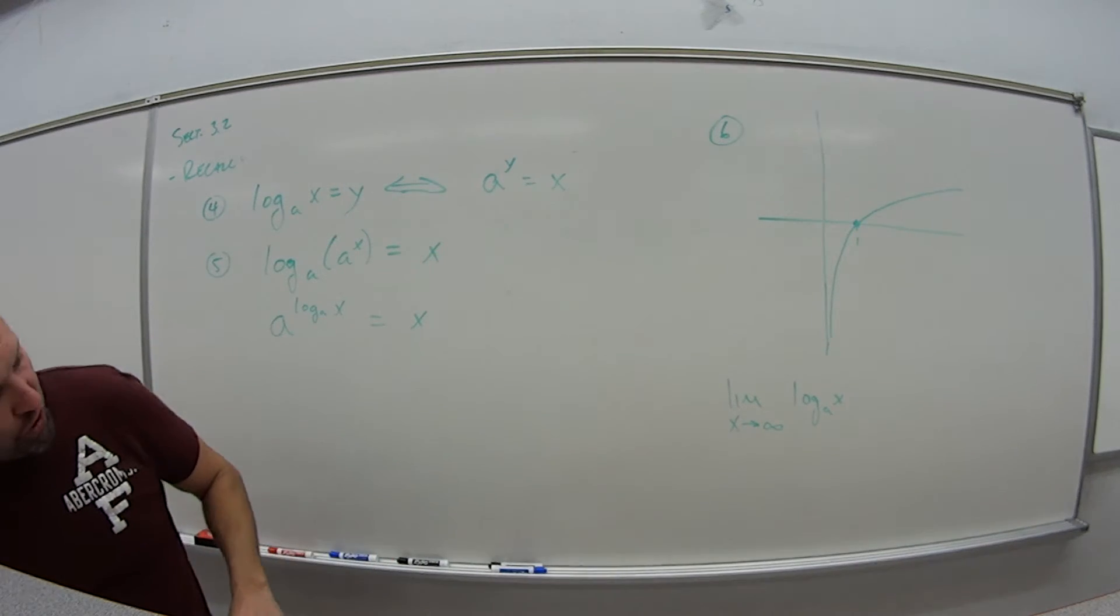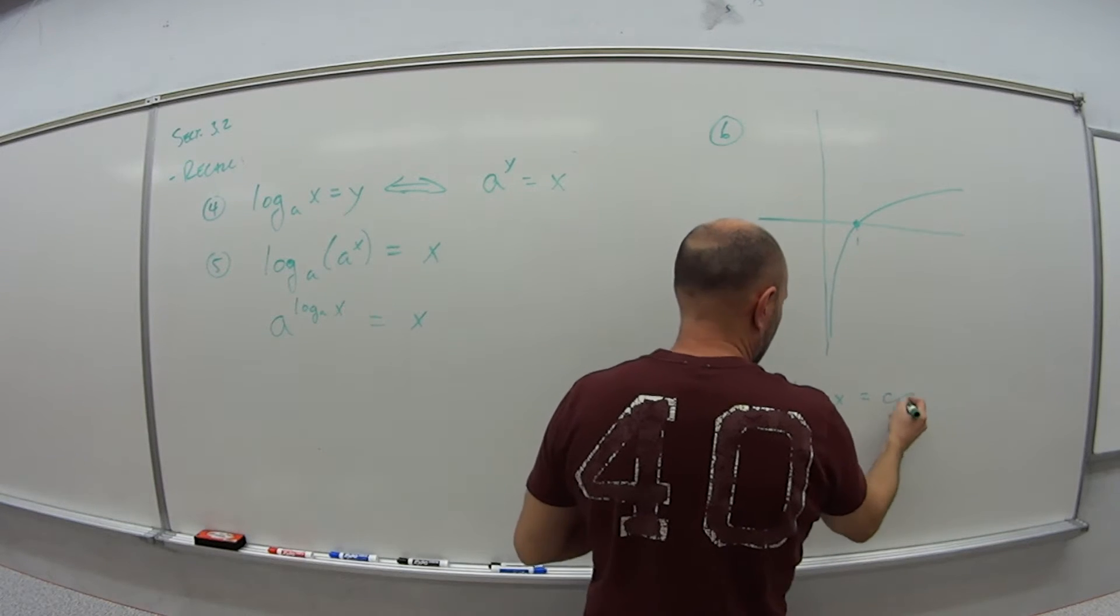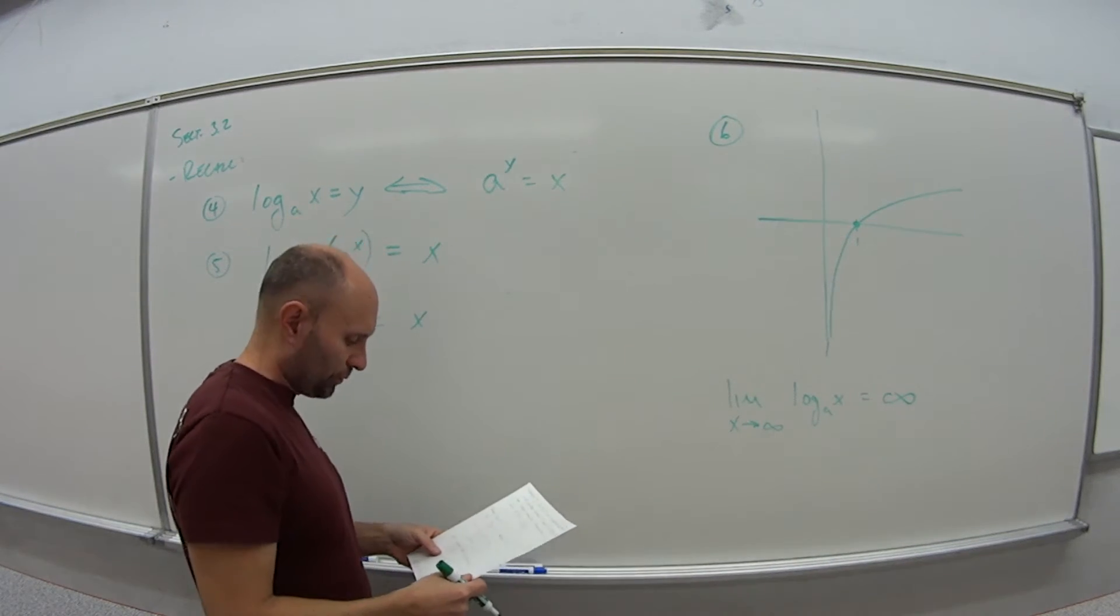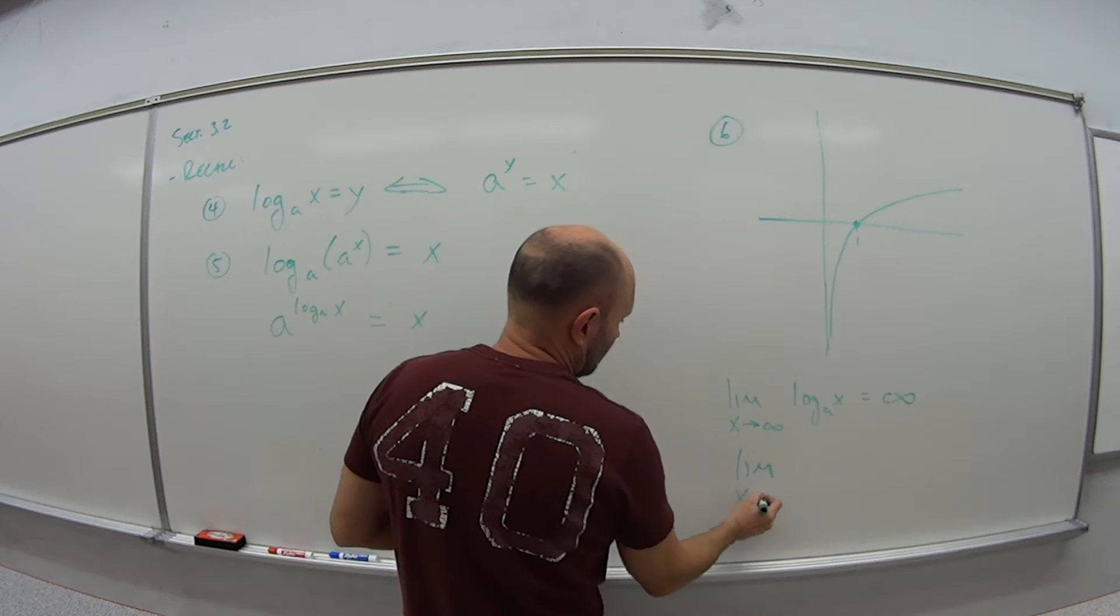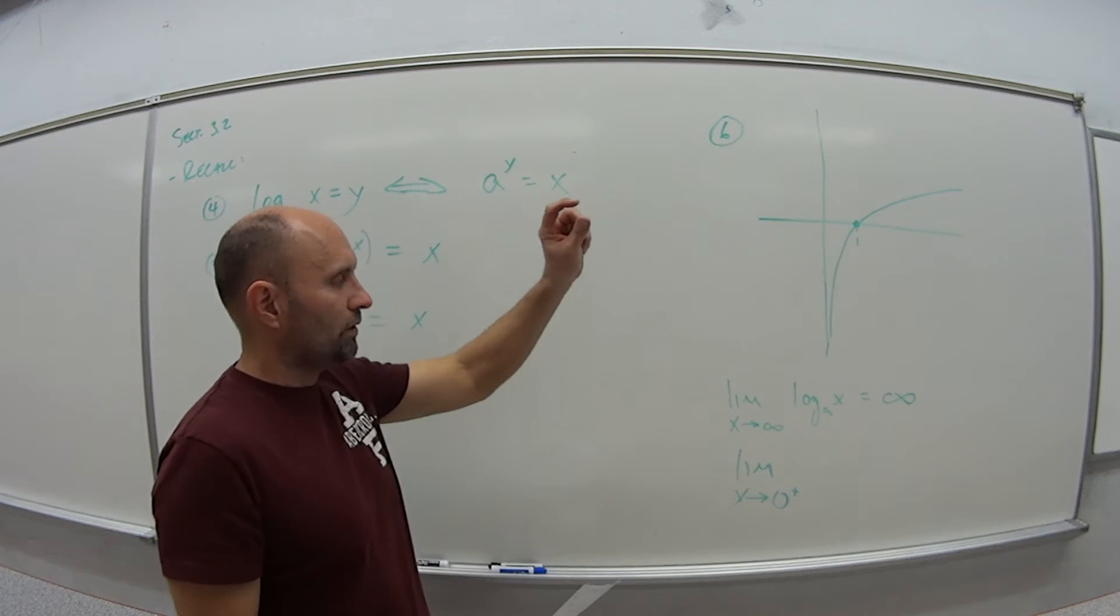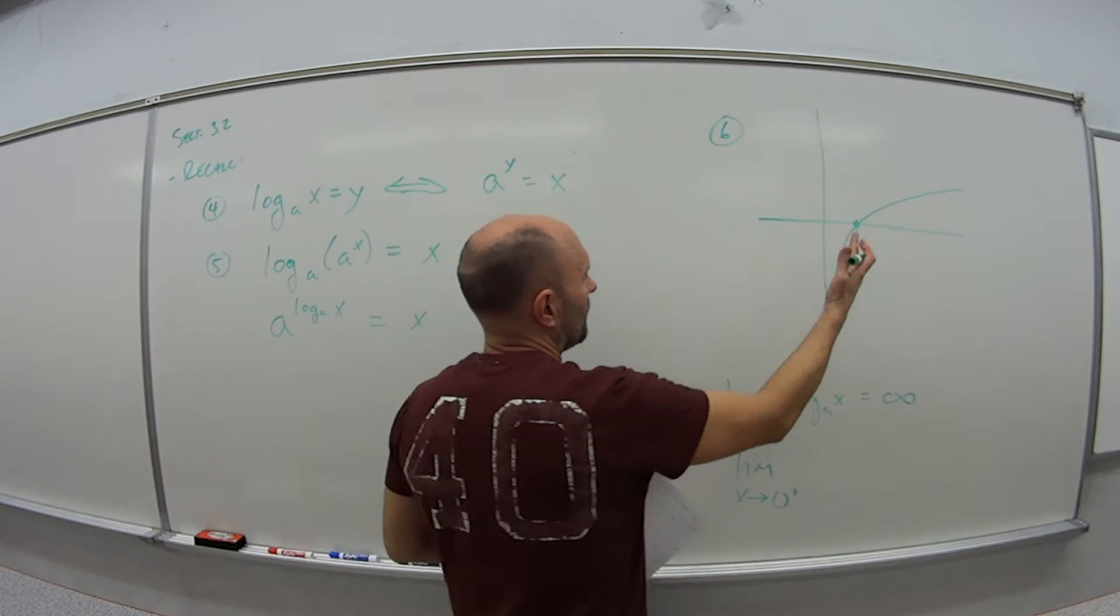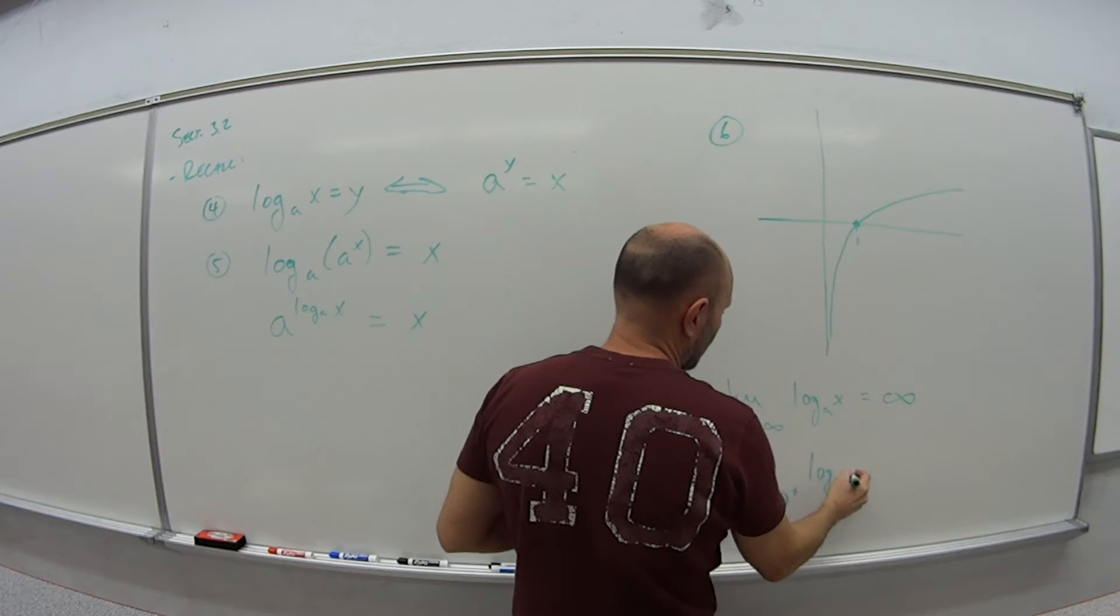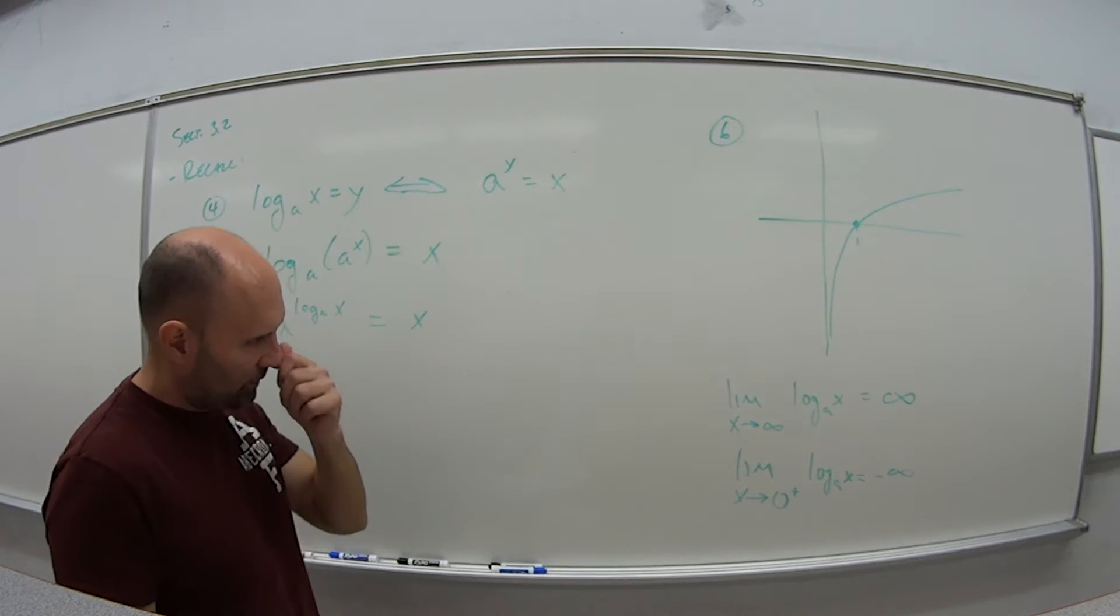So when we have this function, as we go to positive infinity, this goes to infinity. This thing is just going to keep going up and to the right. We also have that the limit as X approaches 0 from the right side—remember that notation, 0 with a little plus sign in the upper corner means 0 from the right side—as we approach 0 from the right side of log base A of X, this is equal to negative infinity. So our value is going to go to negative infinity.